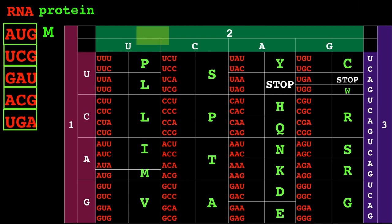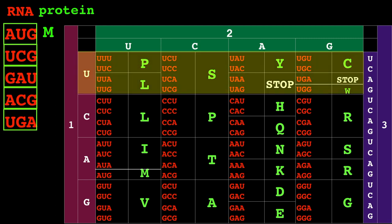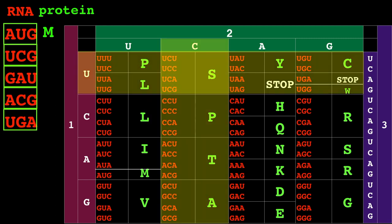Then we go to the second one, UCG. The first nucleotide is U, so we only focus on this row for now. The second one is C, so our codon has to be in this section. And we can see that UCG corresponds to serine, which we will label as S.